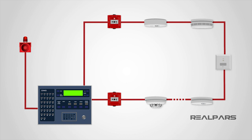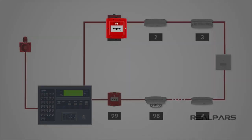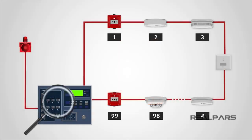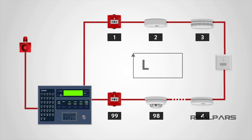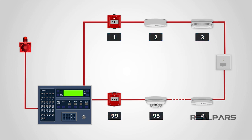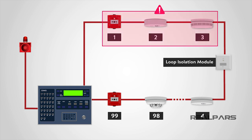The detection principle of an addressable system is the same as a conventional system, except that each detector is given a set address, usually by means of a dip switch, and the control panel can then determine exactly which detector or call point has initiated the alarm. The detection circuit is wired as a loop and up to 99 devices may be connected to each loop. It is common for the loop to be fitted with loop isolation modules so that a short circuit or single fault will only cause the loss of a small part of the system, allowing the rest to function normally.